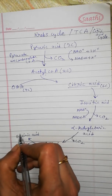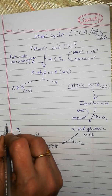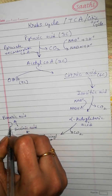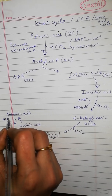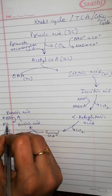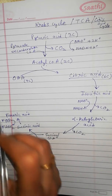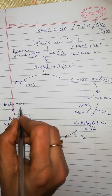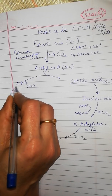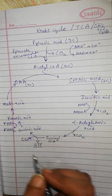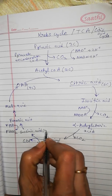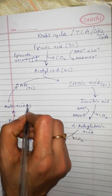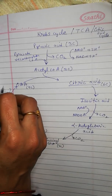This one GTP is equivalent to one ATP molecule. Succinic acid is then converted into fumaric acid, and in this process FAD is reduced to FADH2. Then fumaric acid is converted into malic acid, and malic acid regenerates oxaloacetic acid — a four-carbon compound. In this step, NAD is reduced to NADH.